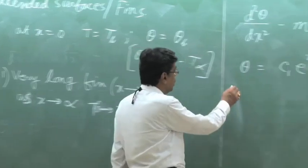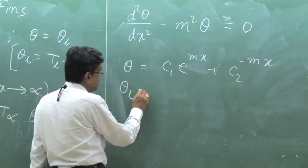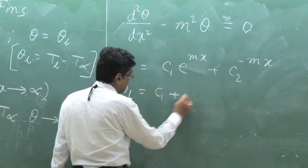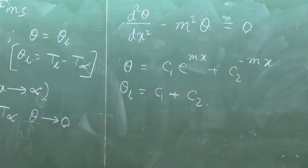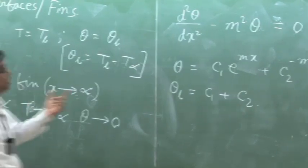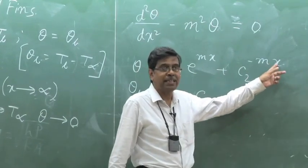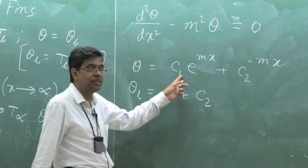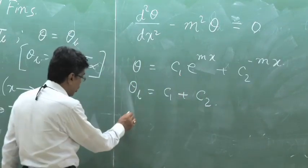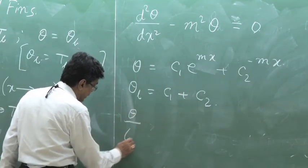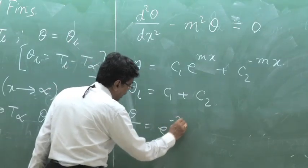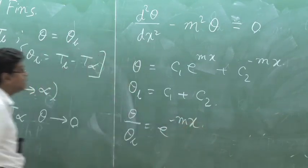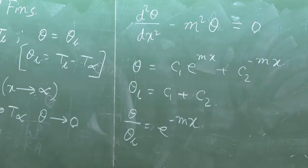The first boundary condition gives theta_b equal to c1 plus c2. Now in this case, if you consider a very long fin, automatically c1 is 0 because if you make x tend to infinity that term vanishes, and if theta is 0 then c1 is 0. That means the solution is theta divided by theta_b equals e to the power minus mx — there is an exponential decay of temperature towards 0.